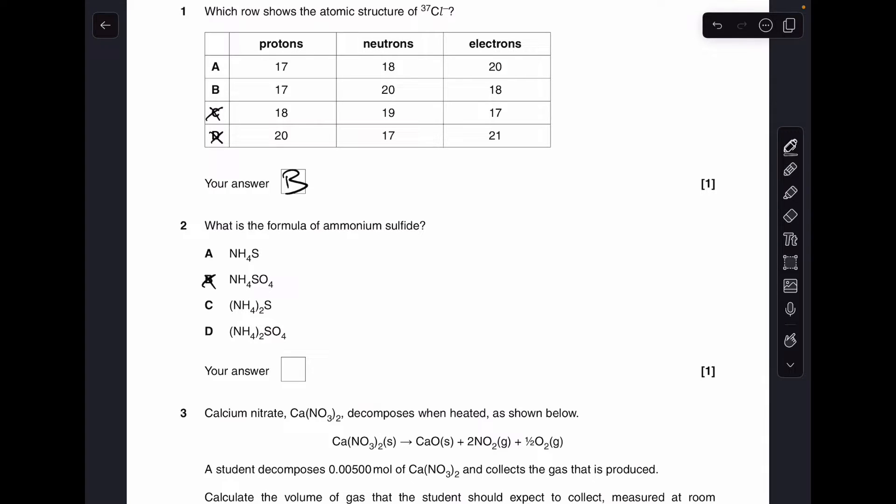Moving on to number 2. First thing I want to do is rule out B and D because they're both sulfates. This is a sulfide. So the ions in ammonium sulfide are the NH4 plus ion and the S2 minus ion. So what ratio of those is needed for a neutral overall compound? It is C, NH4 twice S.